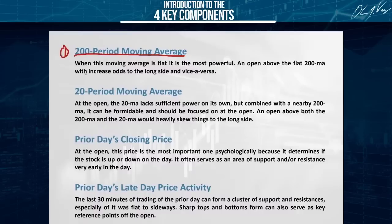This applies to all markets. Item one: find out where the 200 period moving average is on that instrument. Item number two: the 20 period moving average — where is the 20 period moving average on your stock or on the item that you trade? Those are two of the Fabulous Four items we need to note.